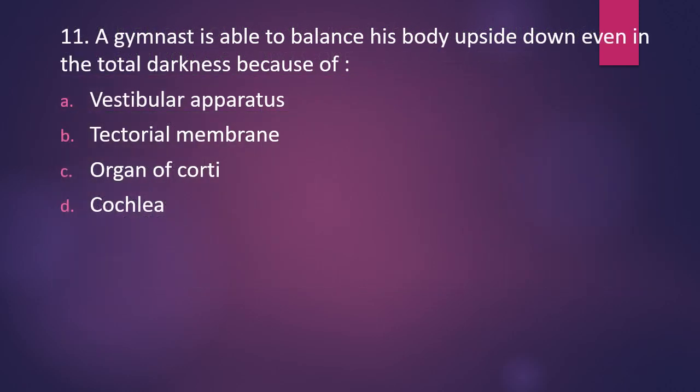Question number eleven: a gymnast is able to balance his body upside down even in total darkness because of — vestibular apparatus, tectorial membrane, organ of Corti, or cochlea? The correct answer is option A, vestibular apparatus, which enables the gymnast to balance the body.